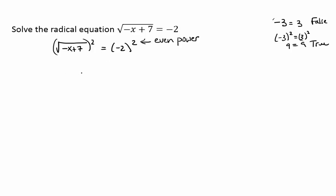That's a problem because our original equation could have been false and we turned it into a true one. So you always have to check your answer — extraneous solutions are possible. If we square the square root it cancels out, and we get negative x plus 7 equals 4. To get x by itself we subtract 7, giving us negative x equals negative 3, then divide by negative 1: x equals 3.